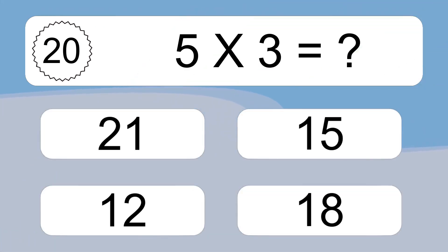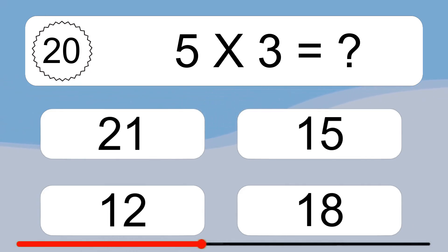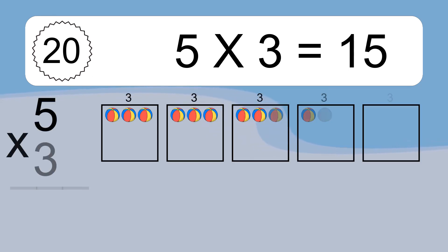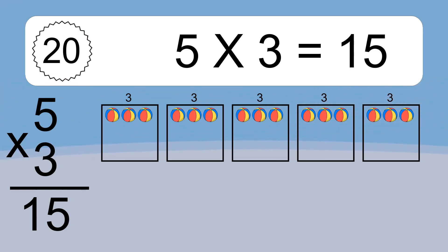Five times three equals what? Five times three equals fifteen. We have five boxes, and each box has three colorful balls inside. If you count all the balls in all the boxes together, you will have five times three balls. This equals fifteen balls.